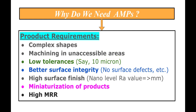You need better surface integrity — this is very important. Surface integrity means that the surface after machining should not have any defects, such as micro-cracks, poor surface finish, or heat-affected zones. If these defects are present, the component may get rejected during inspection. High surface finish, as already mentioned, is another key need, and to achieve all this we require advanced machining processes.